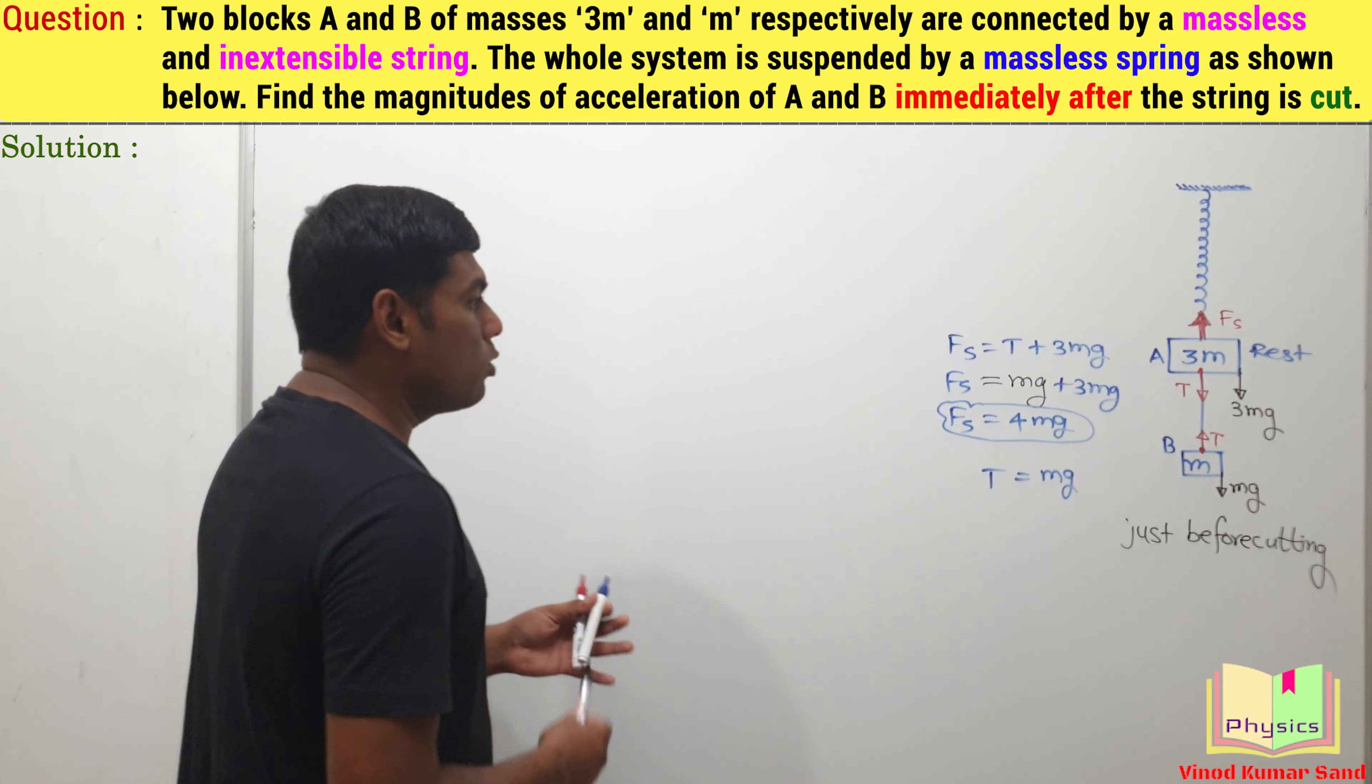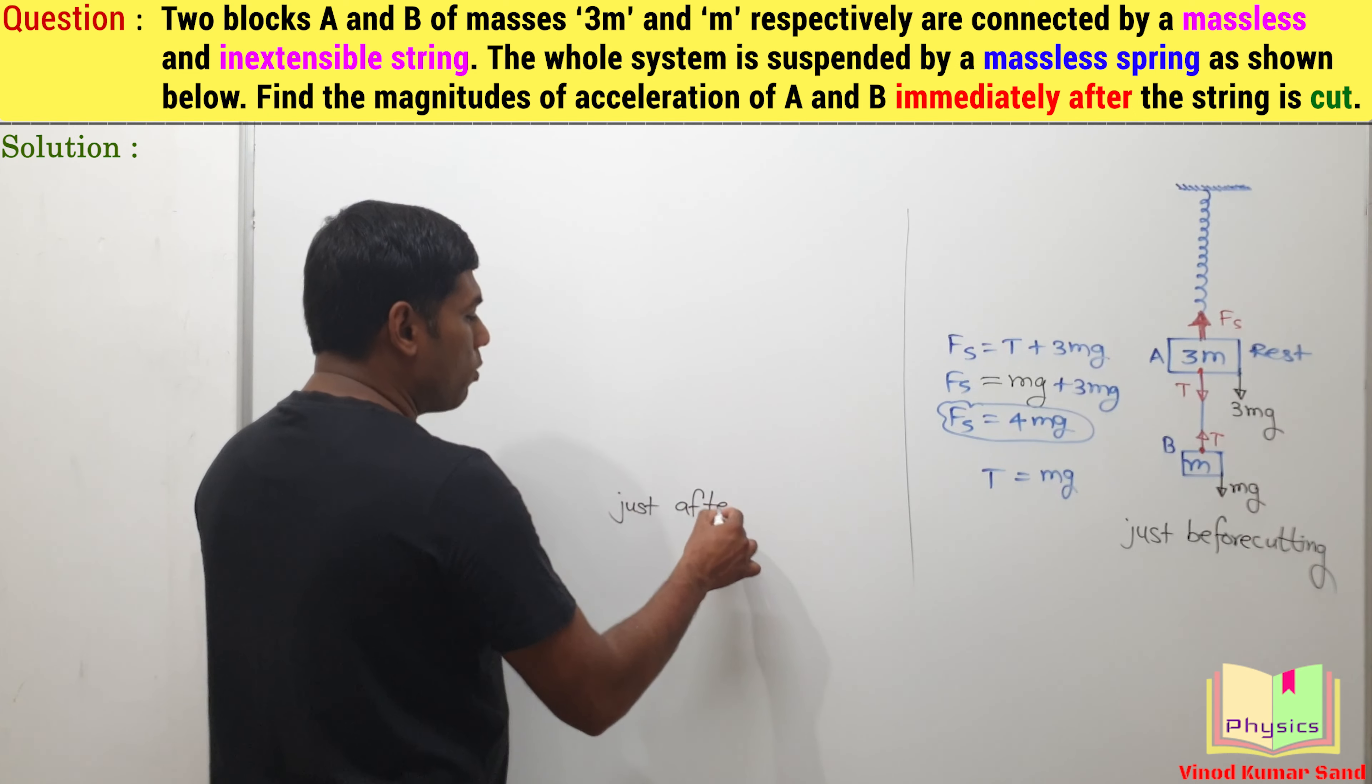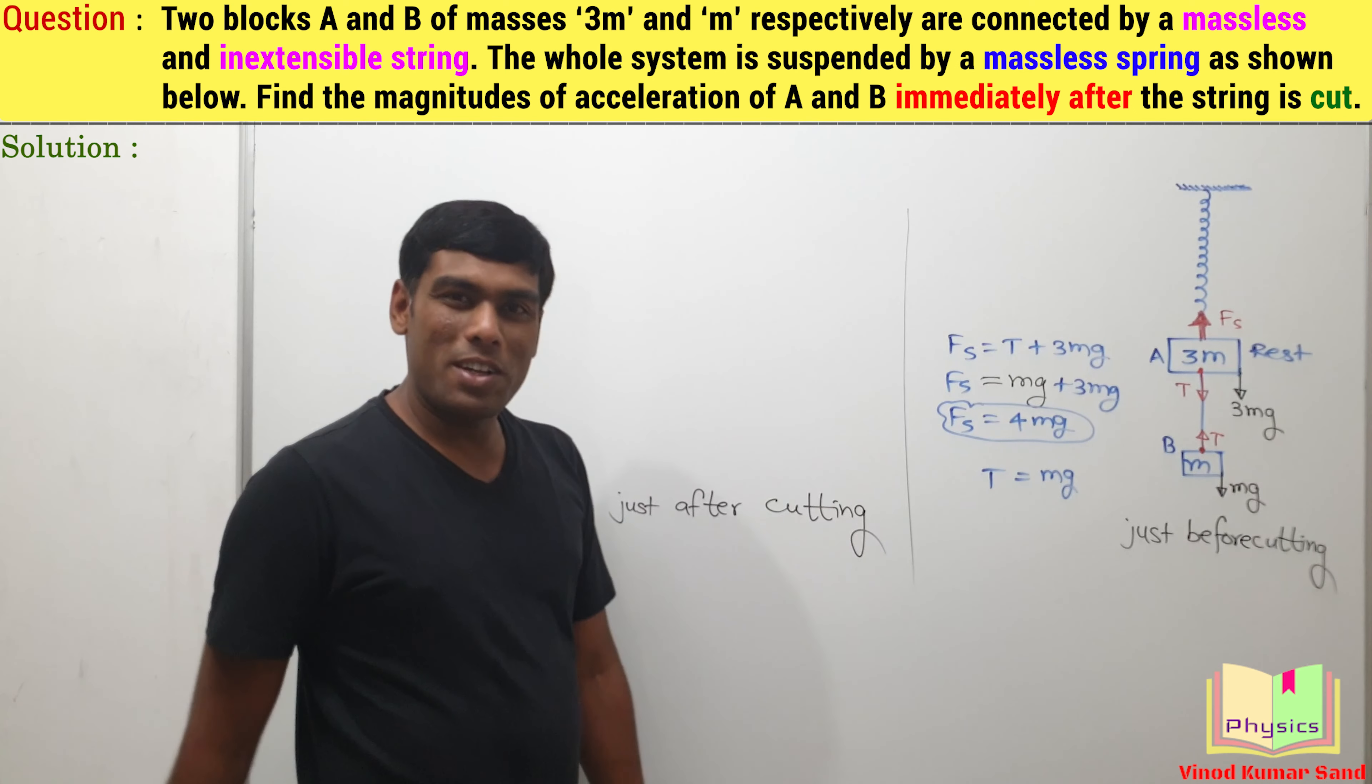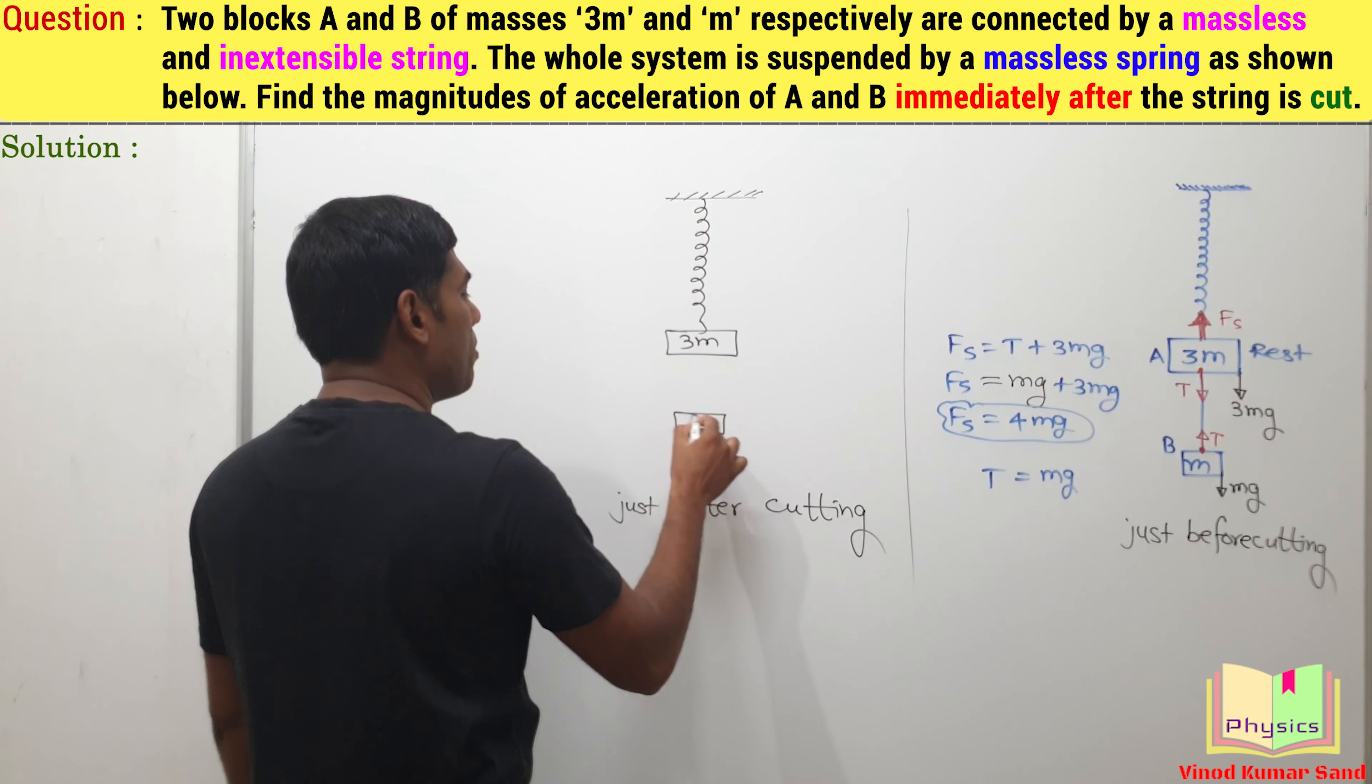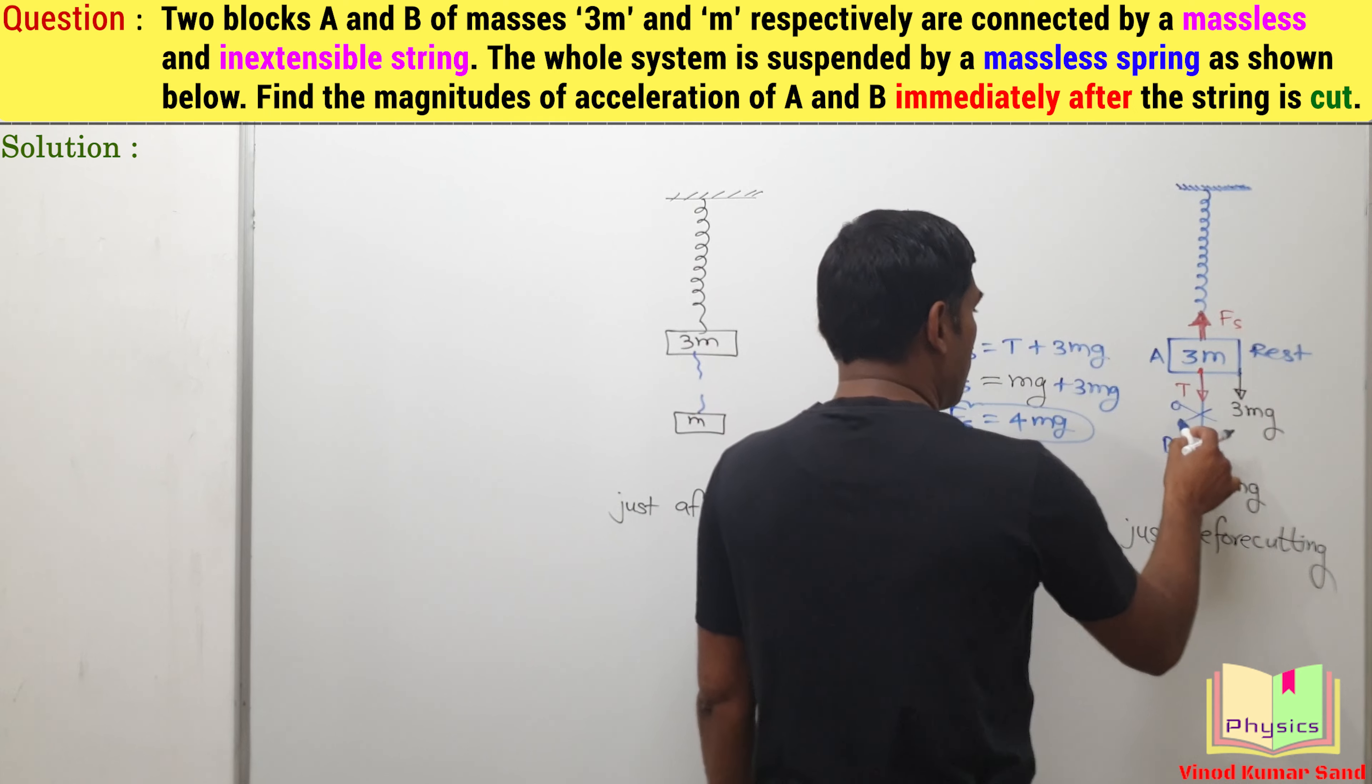Now we need to draw a separate diagram just after cutting. Look at the language of the question - the question is asking us the magnitude of the acceleration immediately after cutting. So another diagram is like this. Here is the spring, here is the mass 3m and here is the mass m. The string has been cut from here.